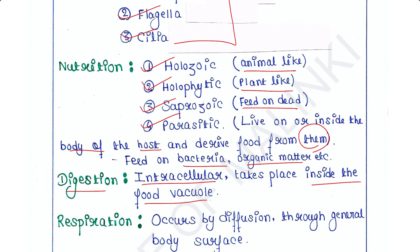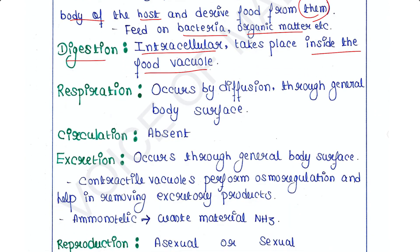Respiration occurs by diffusion through general body surface, because they do not have any respiratory system. They have just a single cell, so through the general body surface, respiration occurs by diffusion. Circulation or circulatory system is absent.